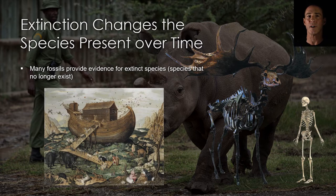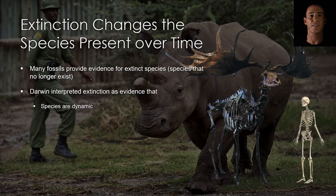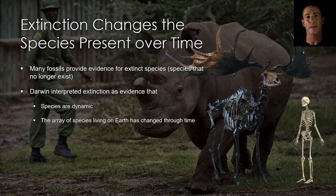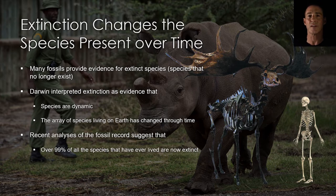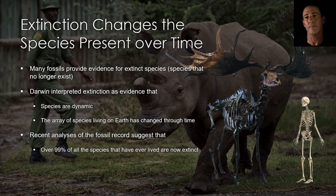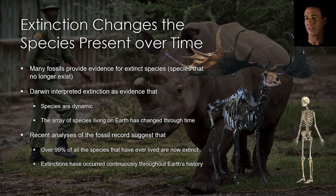Advocates of special creation argued that fossil species were victims of the flood of the time of Noah. Darwin, in contrast, interpreted extinct forms as evidence that species are not static — not immutable entities, unchanged since the moment of special creation. His reasoning was that if species have gone extinct, then the variety of species living on earth has changed through time. Recent analyses of the fossil record suggest that over 99% of all the species that have ever lived are now extinct. The data also indicate that species have gone extinct continuously throughout earth's history.